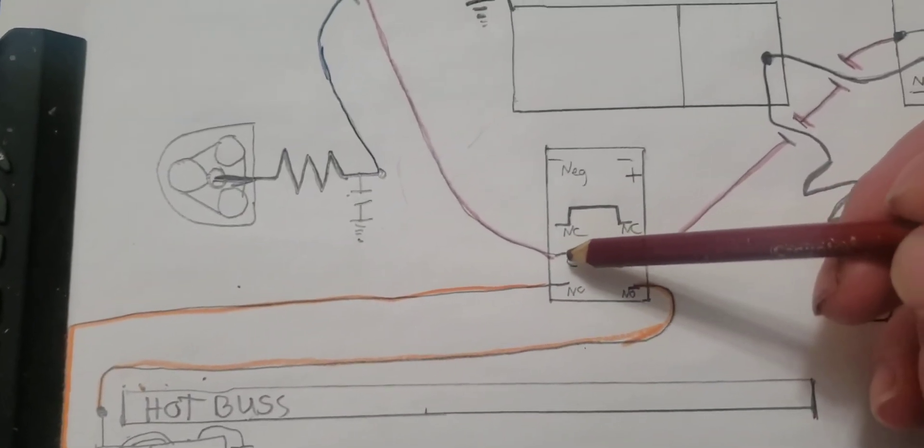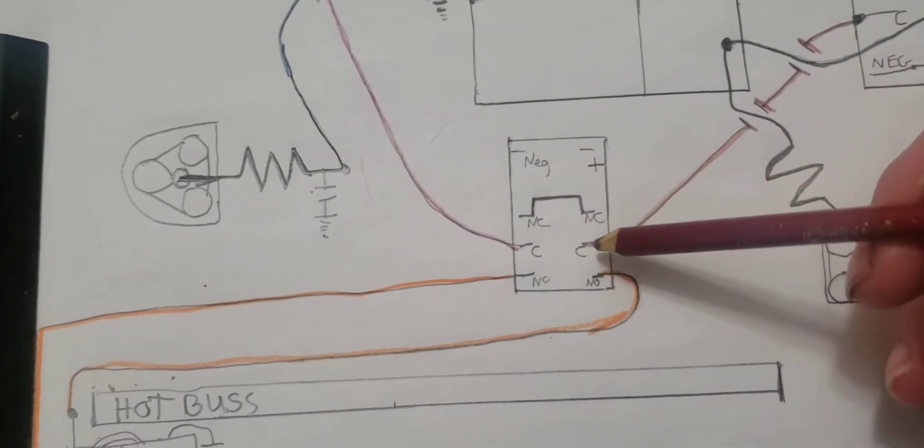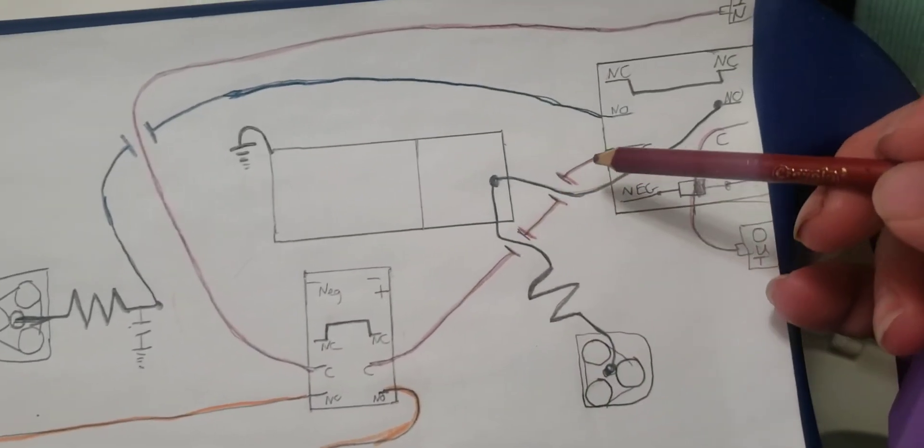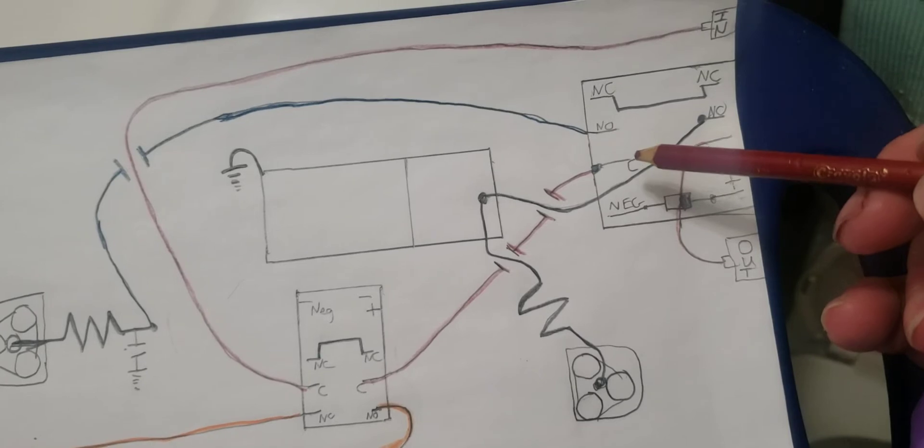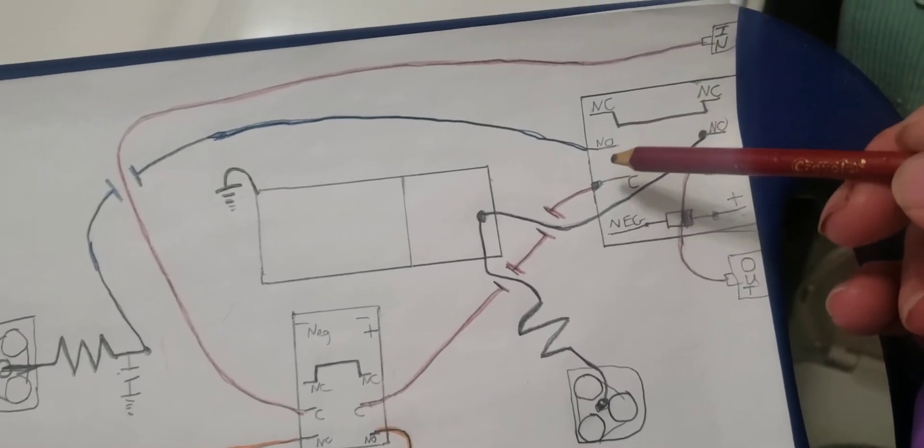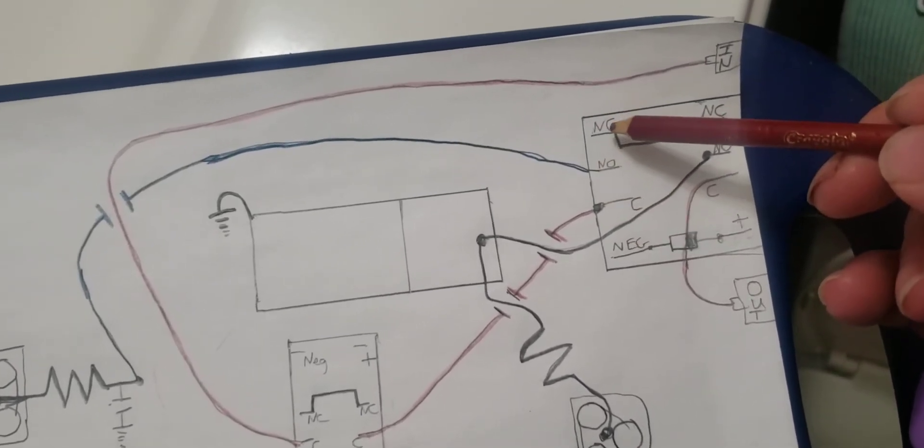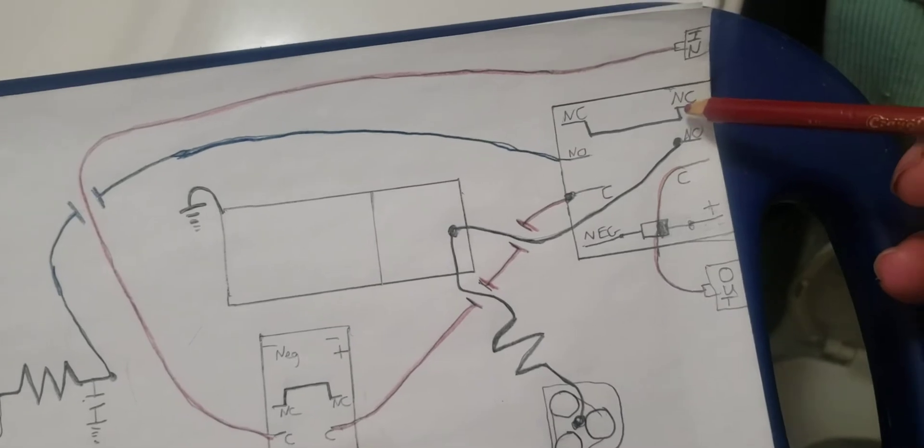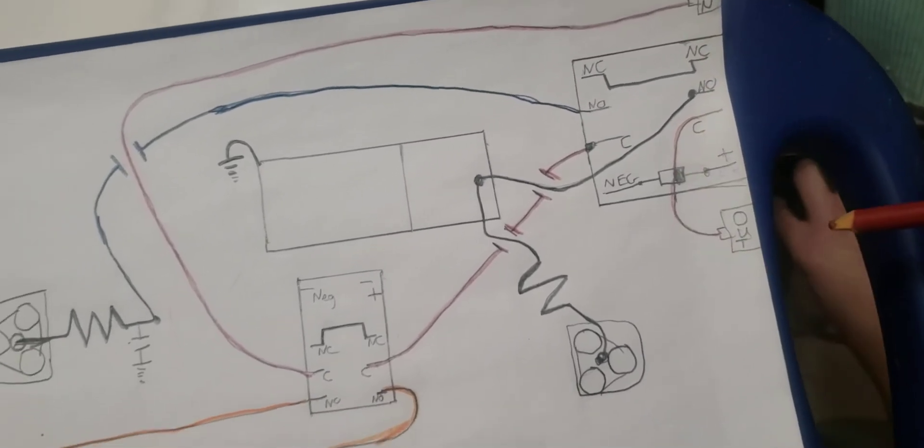So the RF is going to come in and do this. And then come up this way. This is the common pin, normally closed. Just touching the normally closed up here. Back down to this common pin and out of the amp.